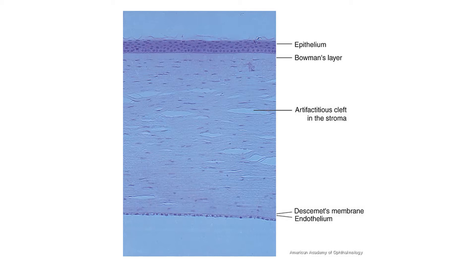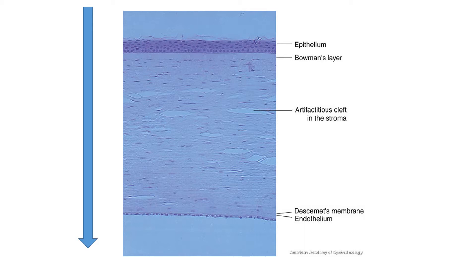This is a pathologic slide of the cornea. Remember, light rays travel in this direction. Light rays first encounter the epithelial layer, followed by Bowman's layer, stroma, Descemet's membrane, and endothelium.